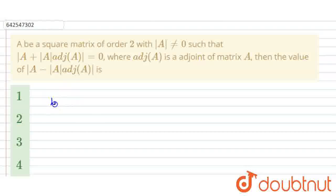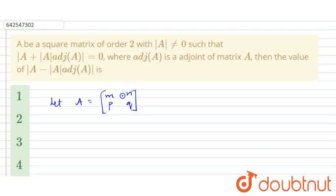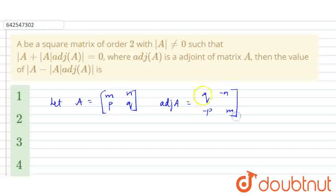First, I'm going to write down the given condition. Let A equal to the matrix [[M, N], [P, Q]]. So these form one matrix. And adjoint A I'm going to take as [[Q, -N], [-P, M]]. Then let mod A value equal to D, which is equal to MQ minus NP.